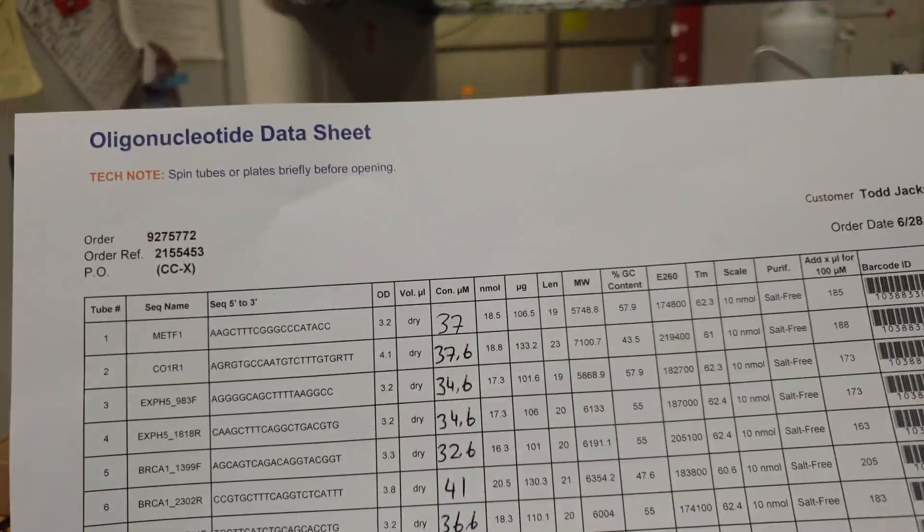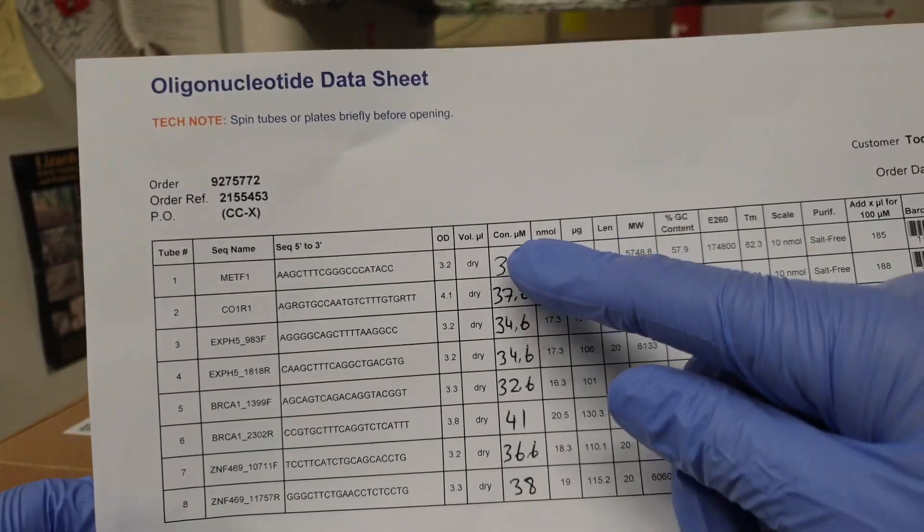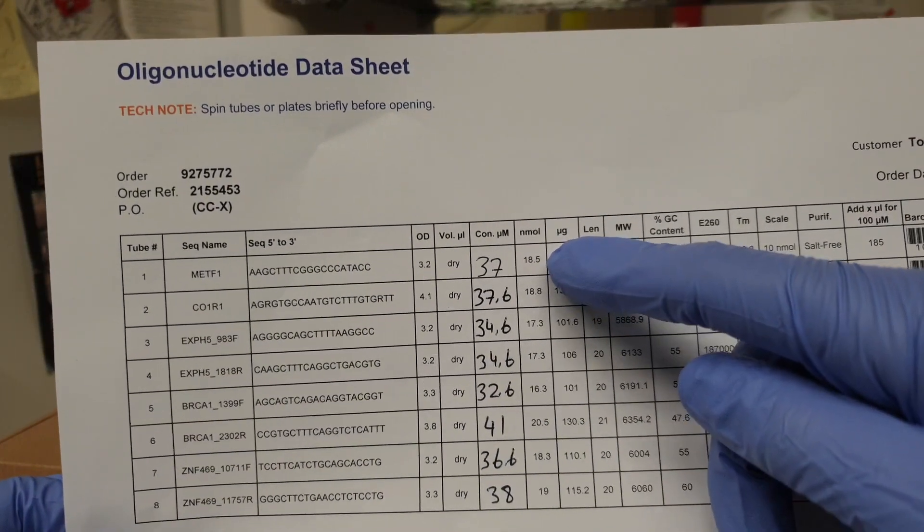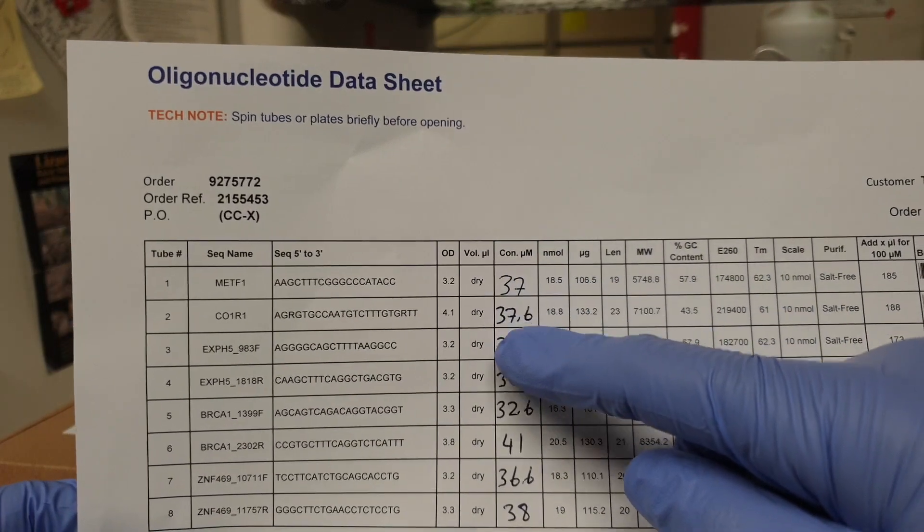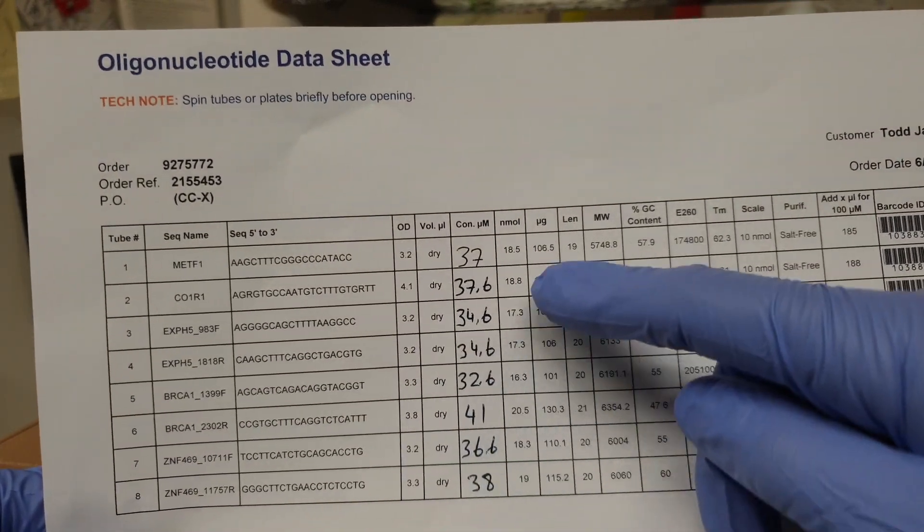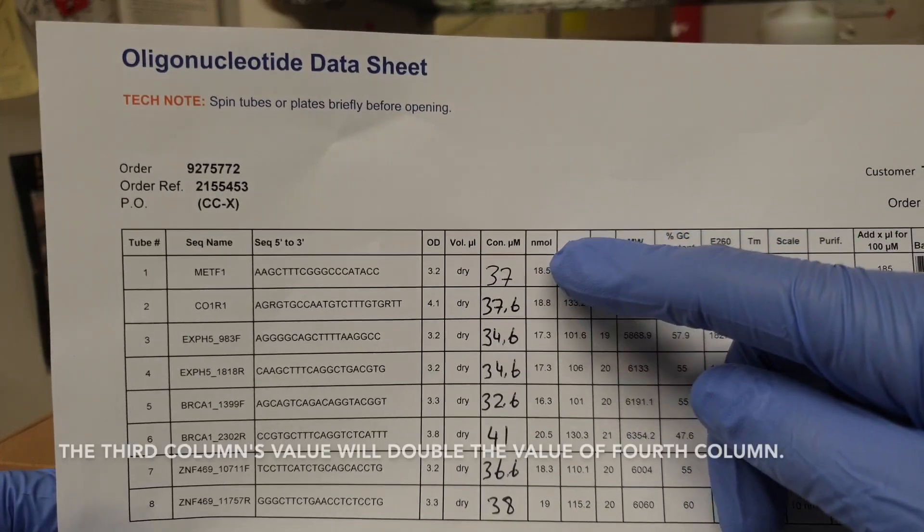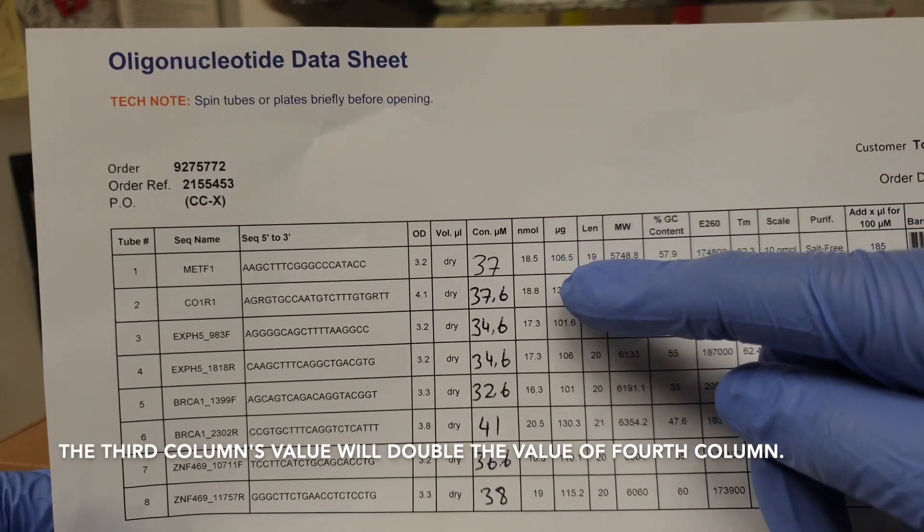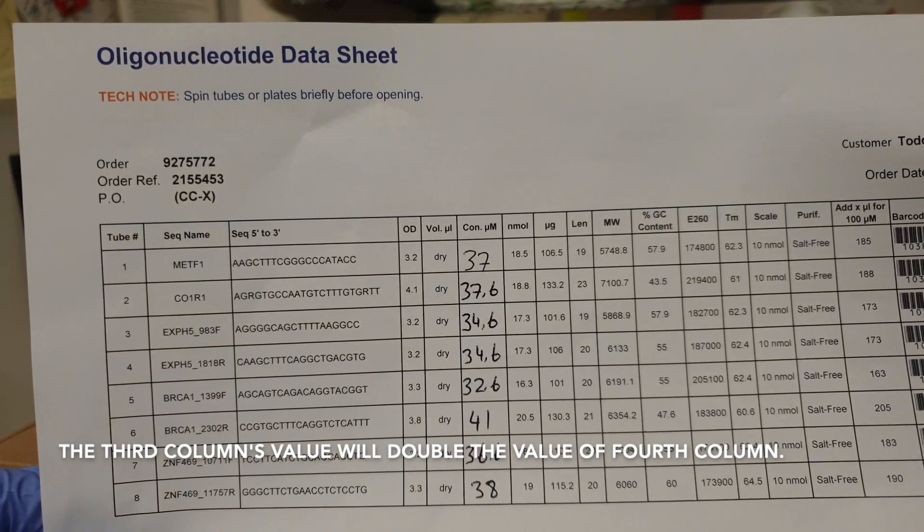As you can see over here, this part I just filled. Normally it comes as these are gonna be empty, and this column with the nanomole, this is gonna be the column that we're gonna be looking at.